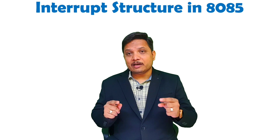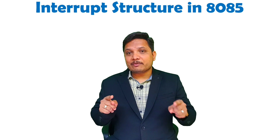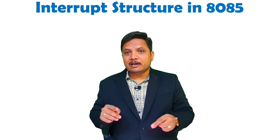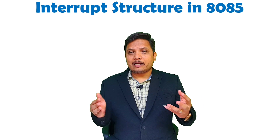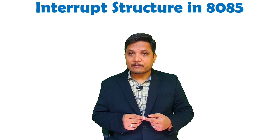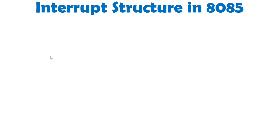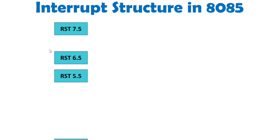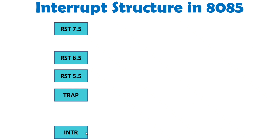This video will be quite interesting and you should watch the entire video so that you can understand how exactly all the interrupts are happening and how we can understand individual interrupts along with their priorities and execution. When we talk about interrupts in microprocessor 8085, there are total 5 pins: RST 7.5, RST 6.5, RST 5.5, TRAP, and INTR, by which we receive interrupts in the 8085 microprocessor.